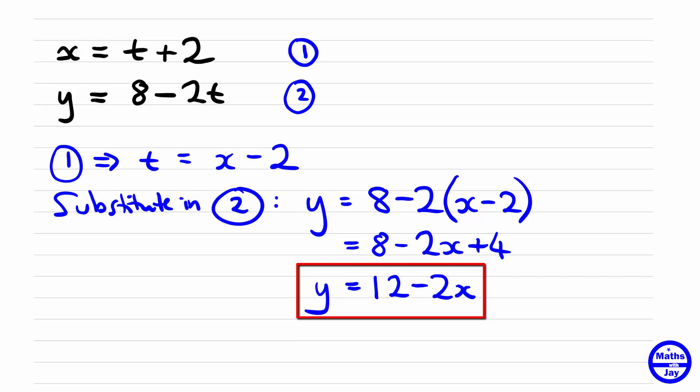You might like to check your answer. Let's choose the easiest value for t. If we look at what happens when t equals 0, using equation 1 we find that x equals 2, and in equation 2, y equals 8. What we're going to do is check that y really is 12 minus 2x.